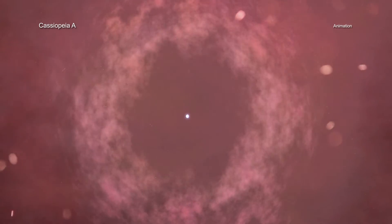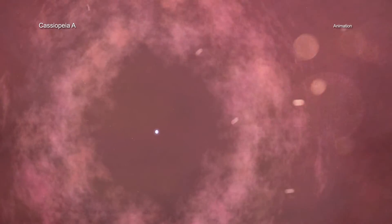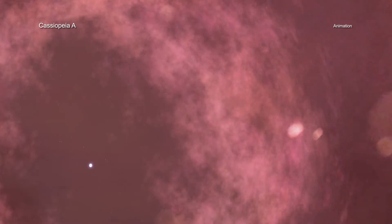When a massive star exploded to create Cassiopeia A about 340 years ago from Earth's perspective, it created a ball of matter and light that expanded outward.